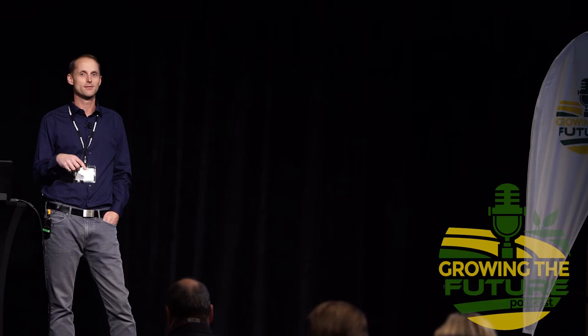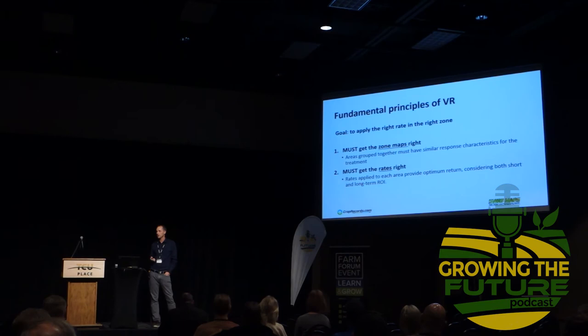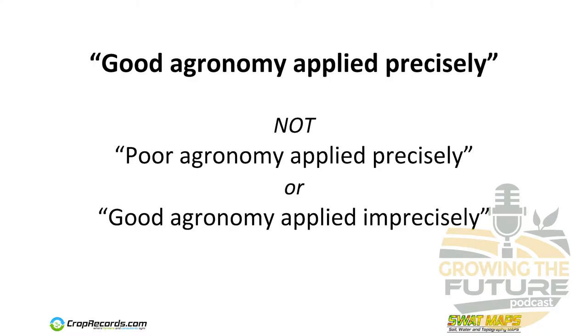I was told, 'Don't worry about that sandy ridge, it's a write-off.' Well, in hindsight, we probably could have managed it and doubled its yield. But you live and learn. So we've got to get both those things right. Our goal is good agronomy applied precisely — not poor agronomy applied precisely, which is where we have a good map but make terrible recommendations.